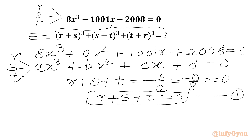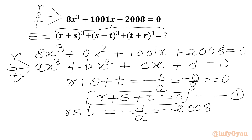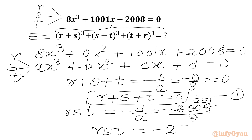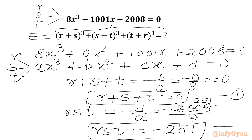Now we write the product of roots r·s·t, which equals −d/a. From our equation, d = 2008 and a = 8, so r·s·t = −2008/8. Cancelling gives us r·s·t = −251. This is equation number 2.